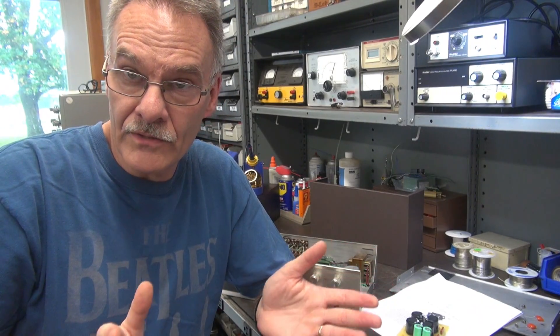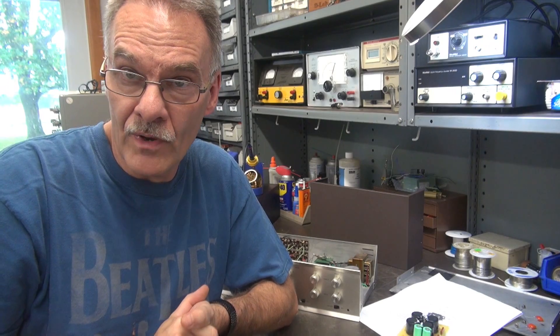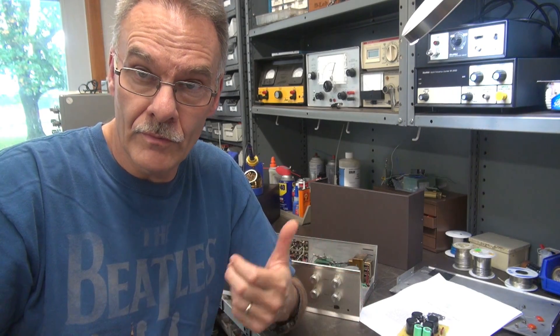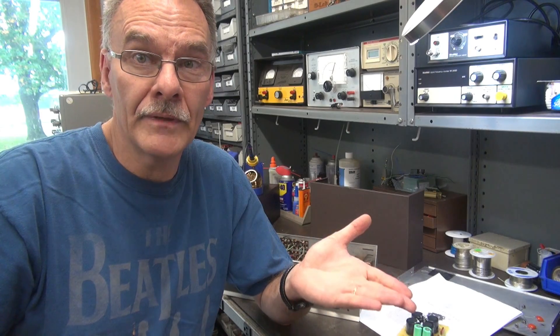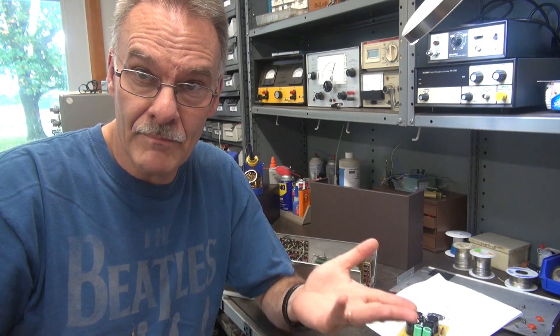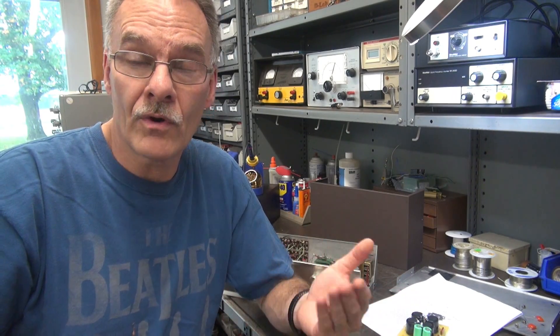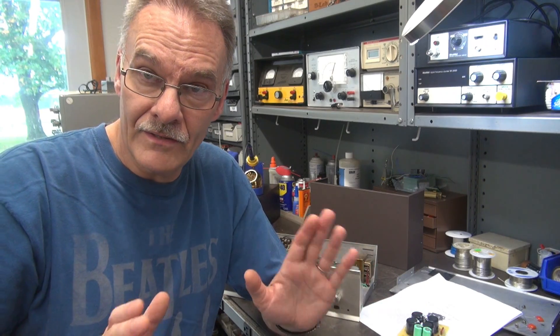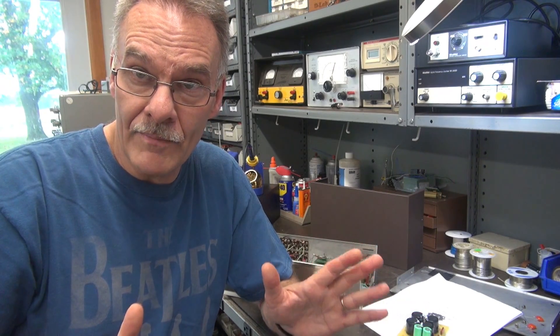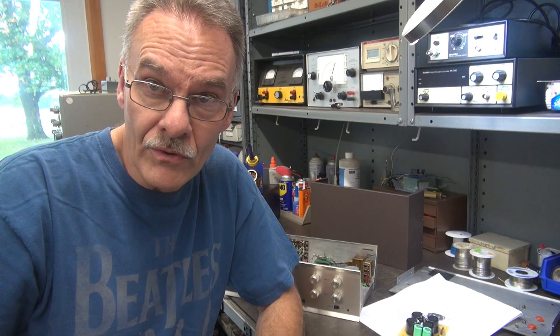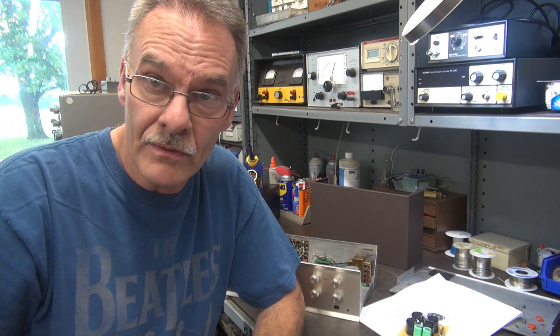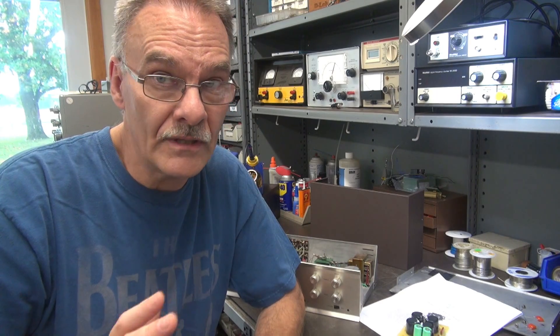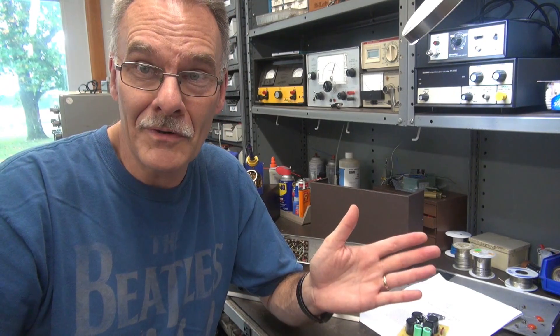All right, so I'm going to start the process. I'm getting the preamp up and running. First thing I'm going to do is remove those caps, get the new board in, and we'll give her a preliminary test, make sure that it can pass some signals. Then I'll work on the filtering circuit and take care of some of the other issues that the preamp has. Now, I talked to the owner, and I explained to him the advantage of the 12X4 tube going to the diodes, and he said, just leave the tube in. So that's what I'm going to do.